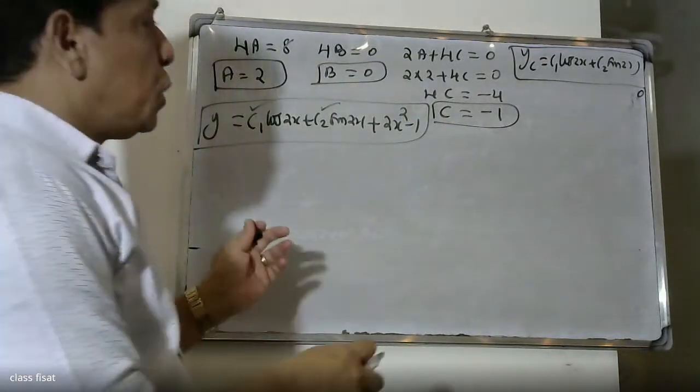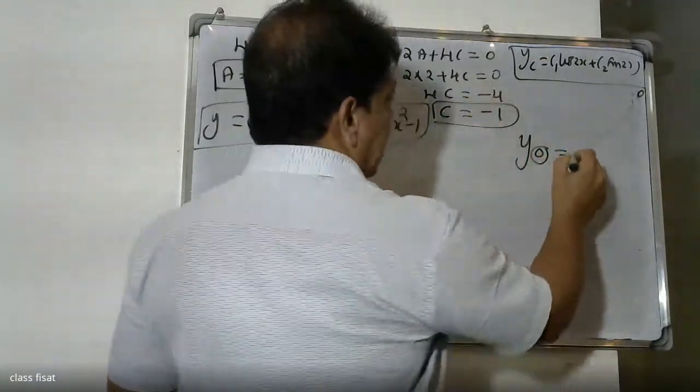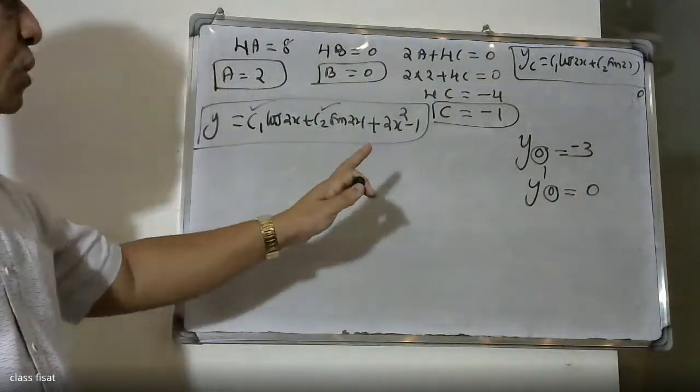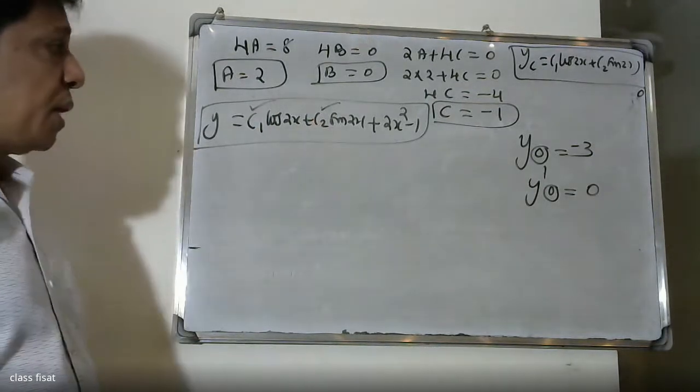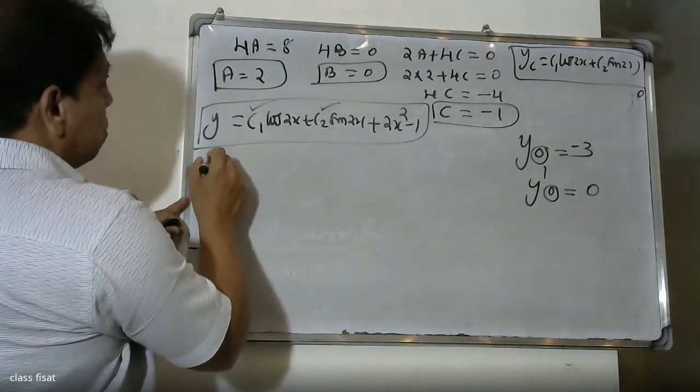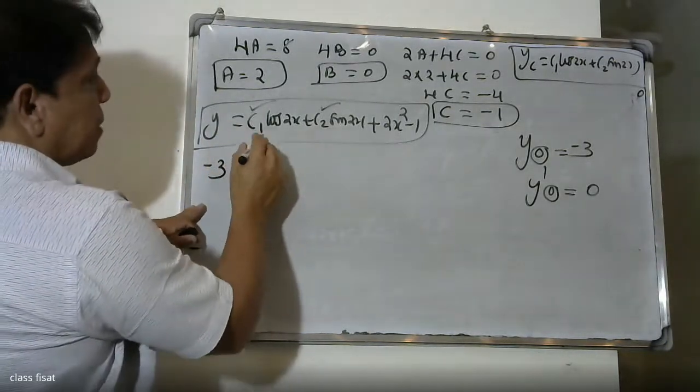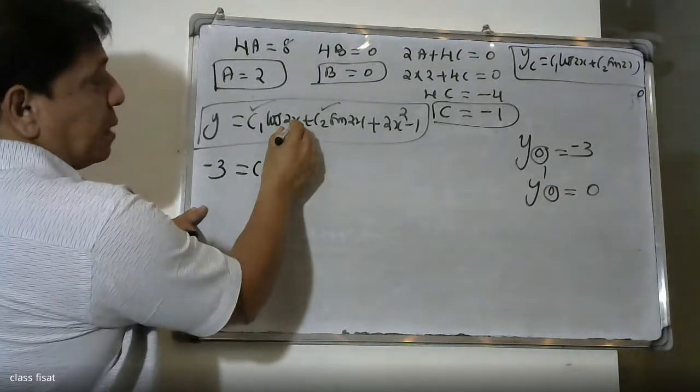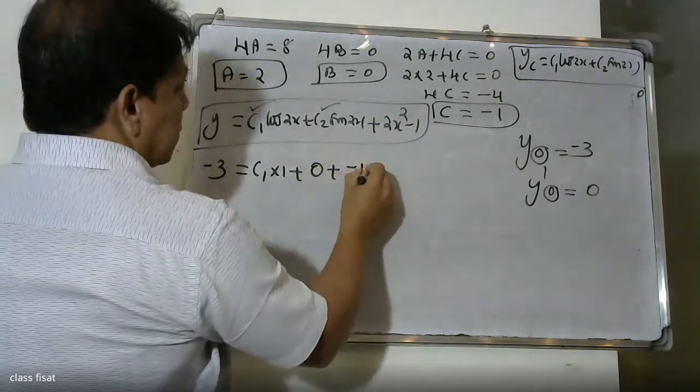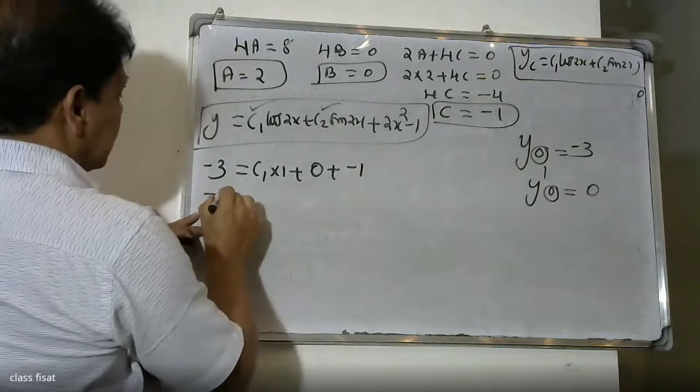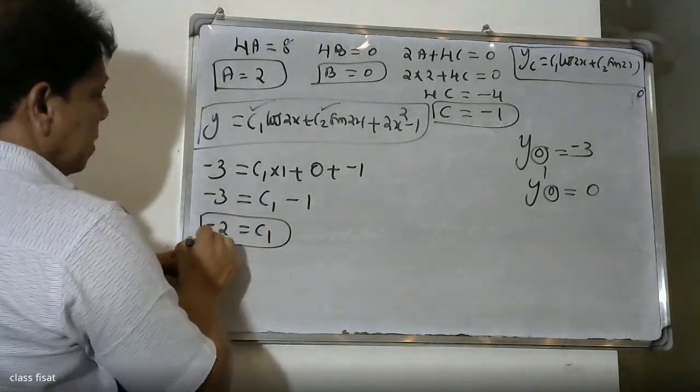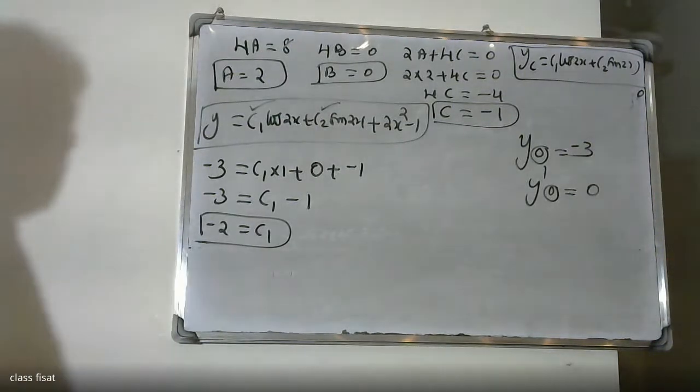Now we apply the boundary conditions to find c1 and c2. The first condition is y(0) = -3. Substituting x = 0: -3 = c1·cos(0) + c2·sin(0) + 0 - 1, which gives -3 = c1 - 1. Therefore c1 = -2.